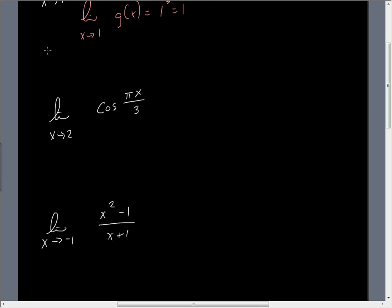Here's a trig example. If we take a look at this, we can just do direct substitution, and this becomes the cosine of 2π/3, which is the cosine of 120°, which would be negative one-half.